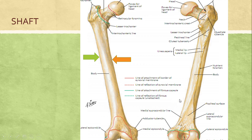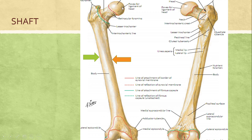For side determination and anatomical position: the rounded head of femur is at the upper end, and the condylar part is the lower end. The linea aspera, the prominent posterior ridge, is pointed posteriorly, and the lesser trochanter is also posterior. Placing the bone on a horizontal surface with the head directed medially, backwards and upwards gives the anatomical position. In the diagram shown, the femur is of the right side.